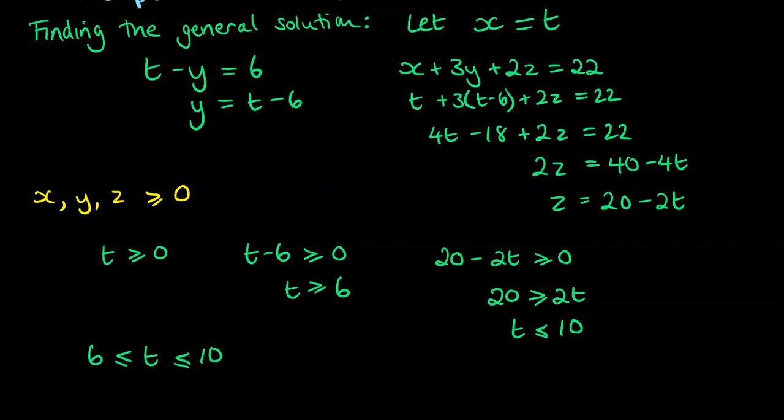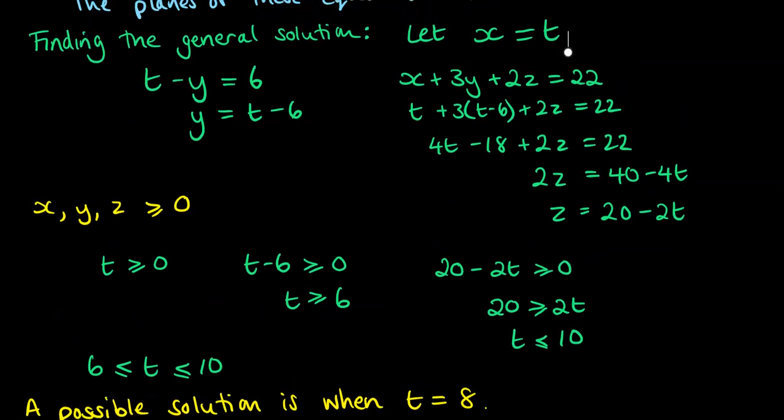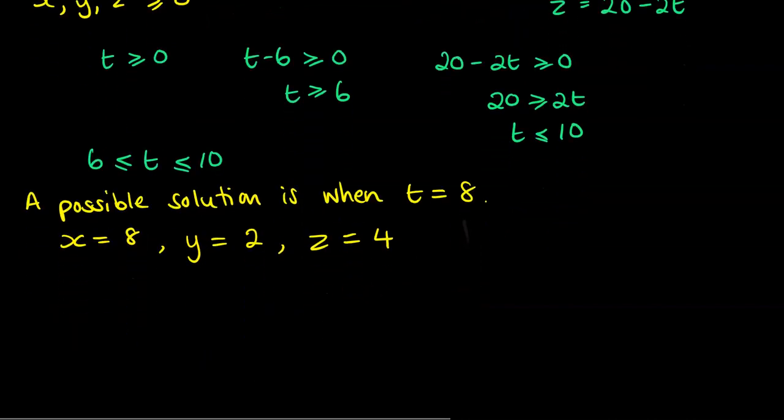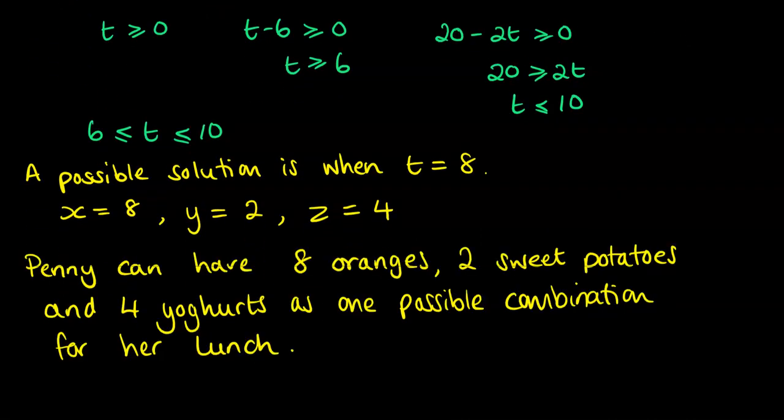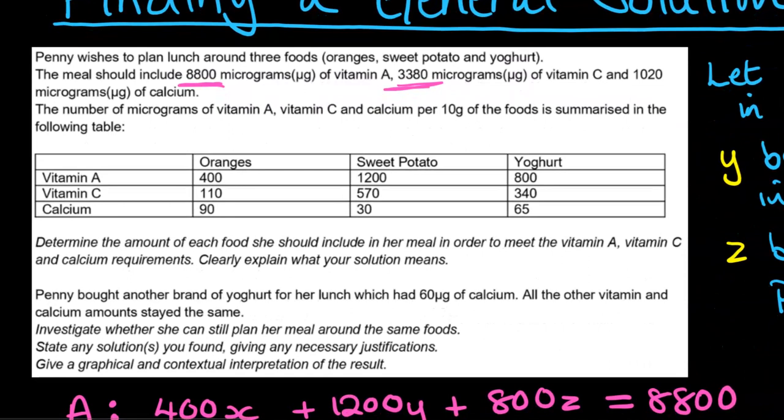Our final thing is to give one possible solution in context. We pick a value for t and then say what that would mean for x, y, and z in context. I've picked t as 8, being smack in the middle of the range that we've got. In this case, x would be 8 because x is equal to t. y is equal to t minus 6, so y equals 8 minus 6, and that's 2. And z is equal to 20 minus 2 lots of t, so z would be equal to 4. In context, this means remembering what x, y, and z stood for, Penny can have 8 oranges, 2 sweet potatoes, and 4 yogurts as one possible combination for her lunch to meet all of the requirements for her vitamin A, C, and calcium requirements.